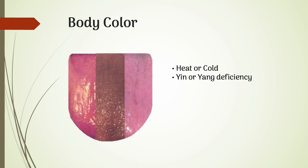A pink tongue is healthy and normal. A red tongue may indicate heat in the body, like a fever or a hormonal imbalance. A reddish purple tongue is a sign that there may be inflammation or an infection in the body. A pale pink tongue may be a sign of a vitamin deficiency, a weak immune system or a lack of energy. When you look at the body color, we determine if there is heat or cold, yin or yang deficiency.